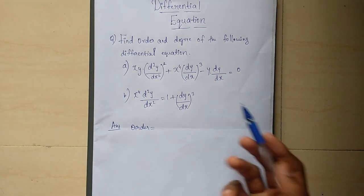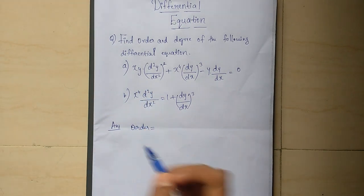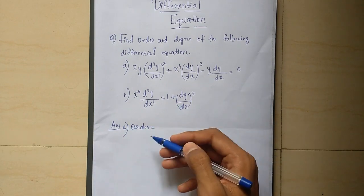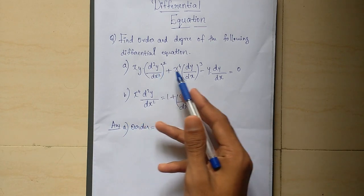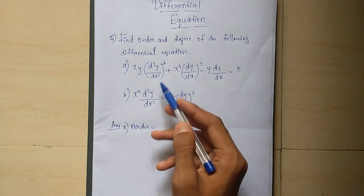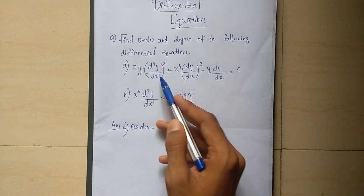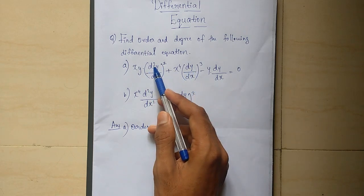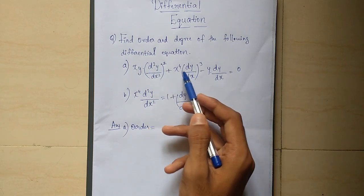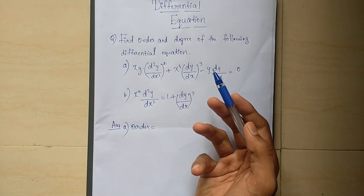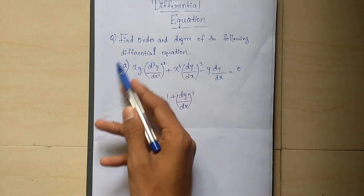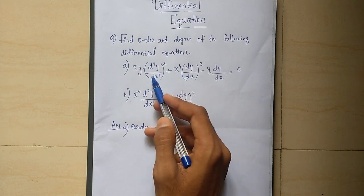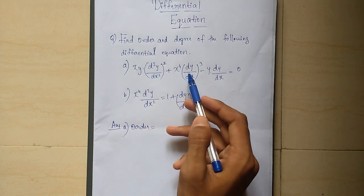See, the equation has an order. The equation involves dy by dx. The order is determined by the highest derivative. The first equation is dy by dx.